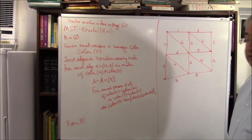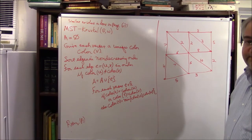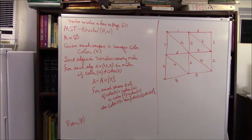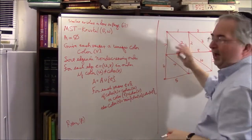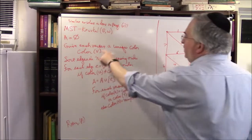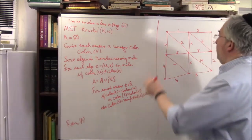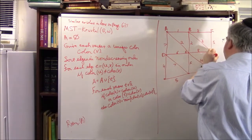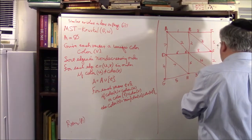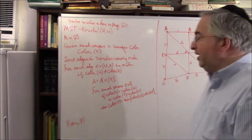First, the tree is empty. I'm going to shade in the elements of the tree. Give each vertex a unique color — I'll call them A, B, C, D, E, F, G, H, I. I'm giving each vertex a letter to represent its color. Now sort edges in non-decreasing order: the first edge is weight 1, then weight 2 (there are three of them), then weight 3, then weight 4.